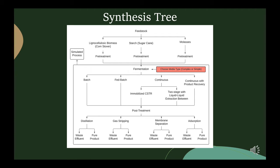Shown on this slide is what we call the process synthesis tree, a diagram showing the important decisions that were made as the process was developed. At the top, we start with our feedstock, where we have three categories of choices: basic starch or sugary feedstock, molasses, or lignocellulosic biomass such as corn stover or rice bran.